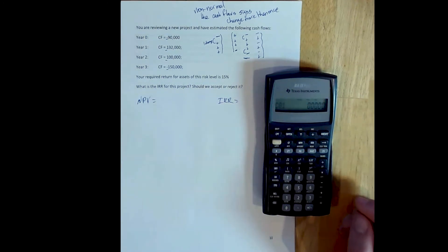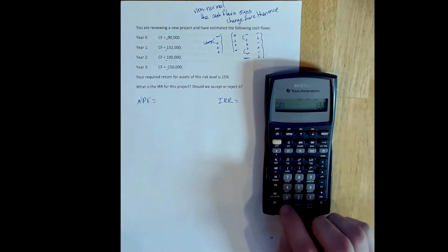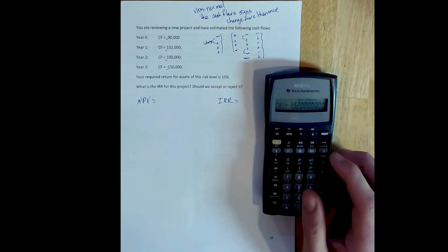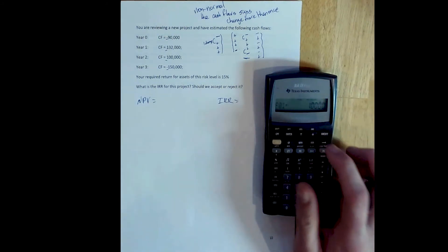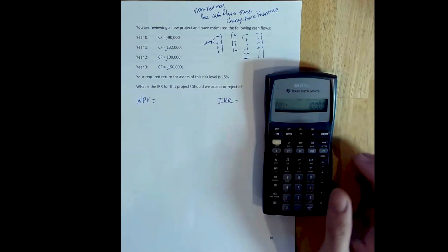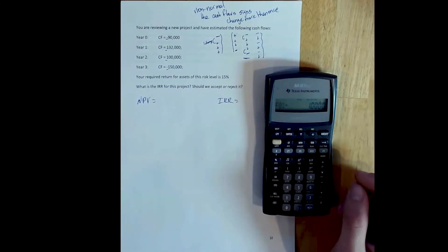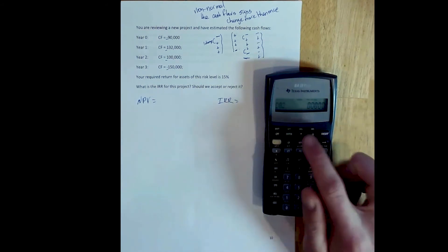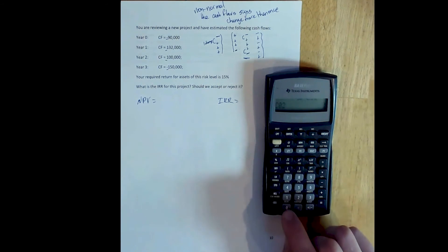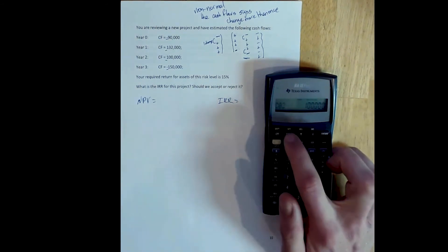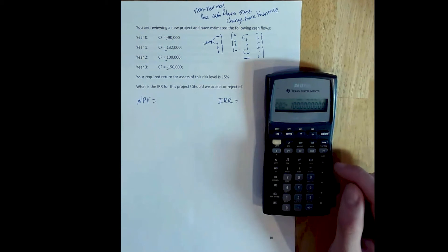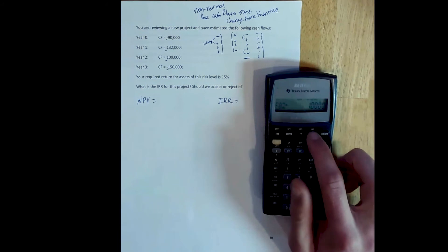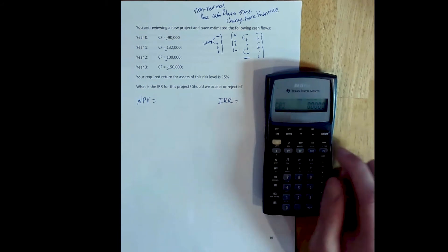We move on with the down arrow to the first cash flow, and the first cash flow is $132,000. We set that value with the enter button. We leave the frequency of the first cash flow at its default value, because this cash flow doesn't repeat, so we just move on. The second cash flow is $100,000, so we enter $100,000. We leave it as a positive. That's a cash inflow. We set that value with the enter button. We move on. We leave the frequency at 1. This cash flow doesn't repeat. We move on.